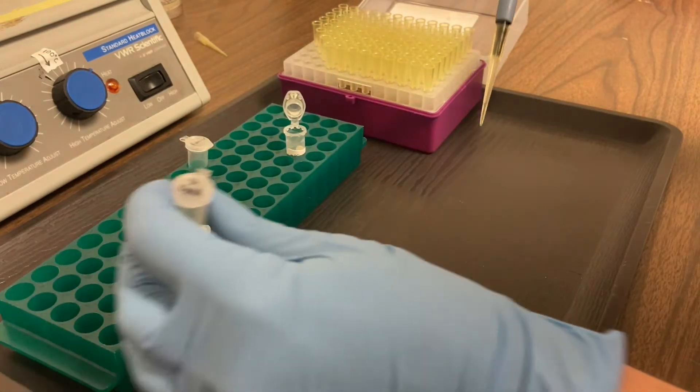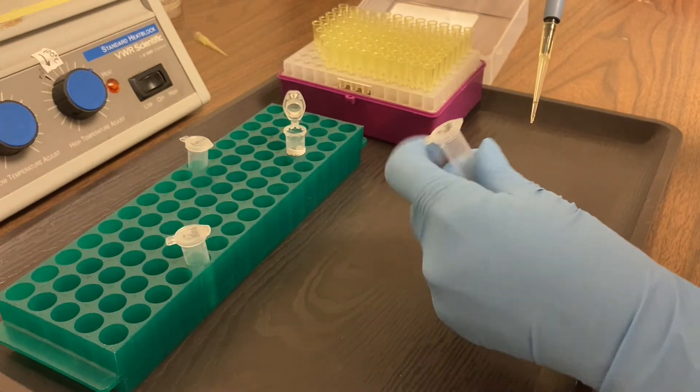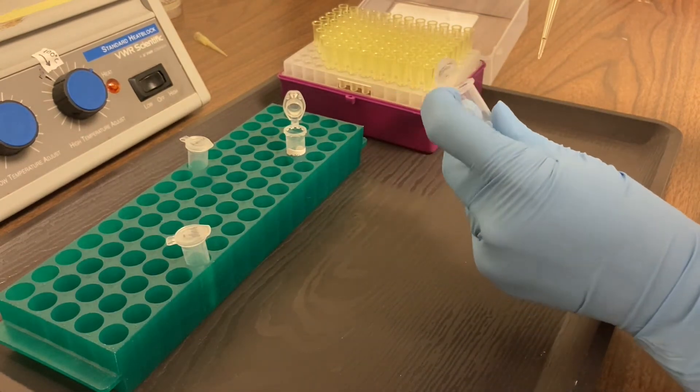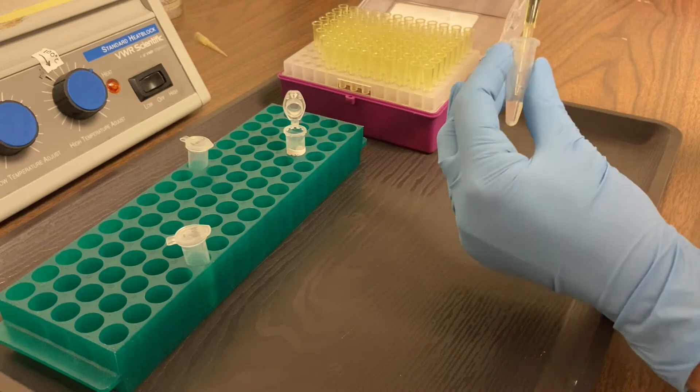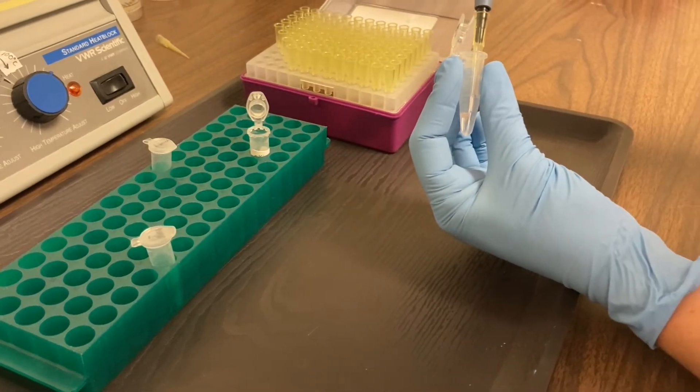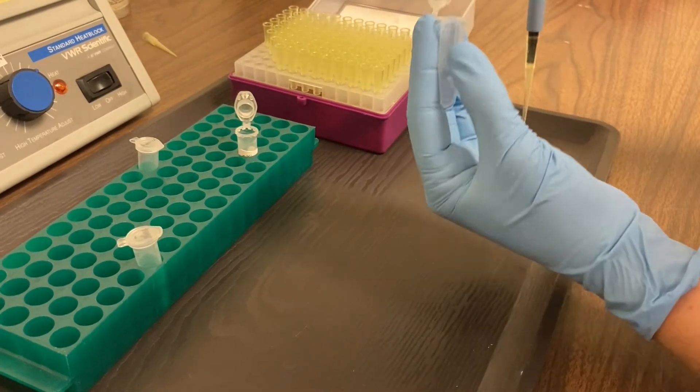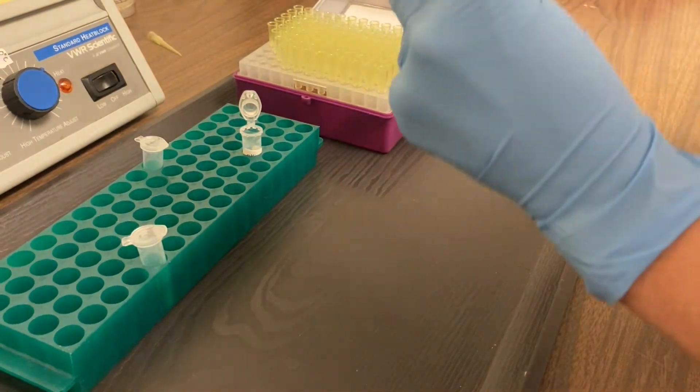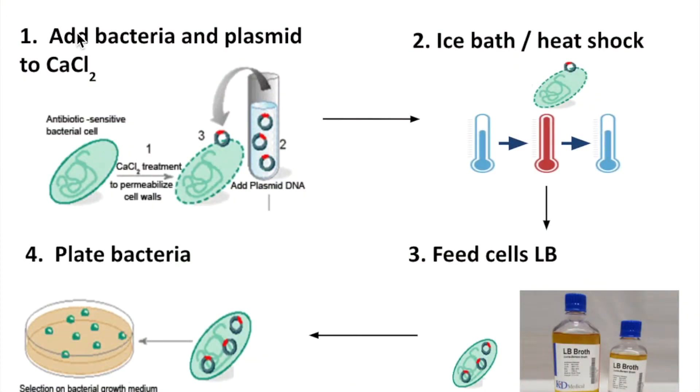So let's go back and review what we put in this tube with the plus DNA. We have our bacteria, we have our calcium chloride, and we just added the plasmid DNA to the tube. So that's it for the first part of the lab.